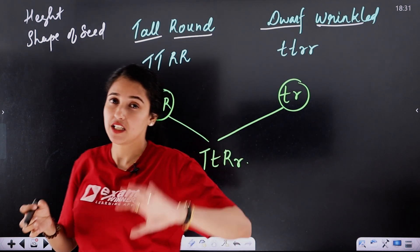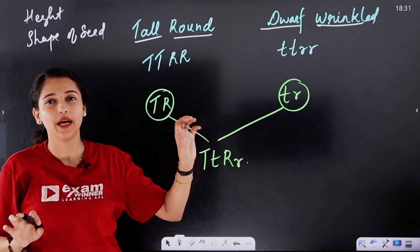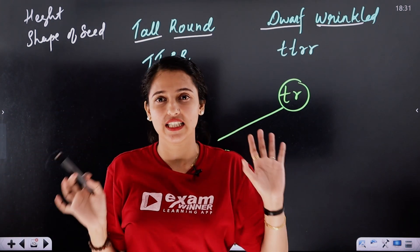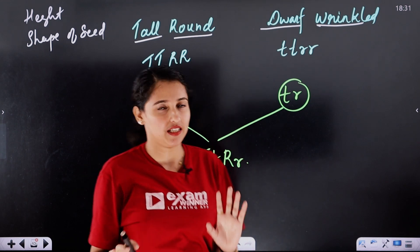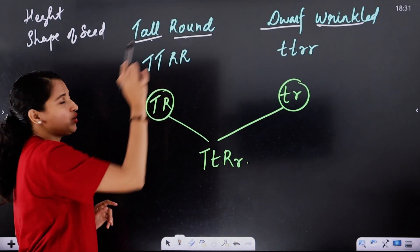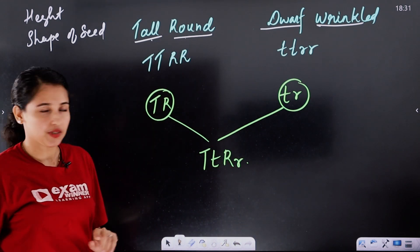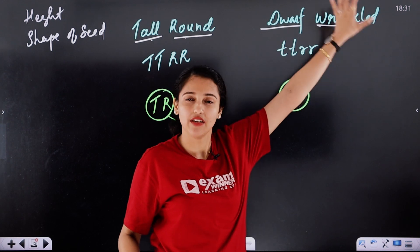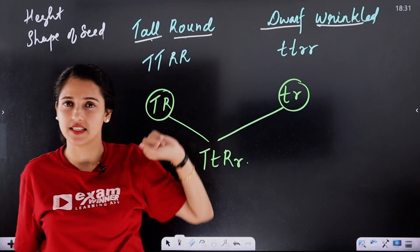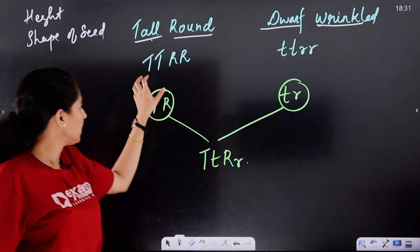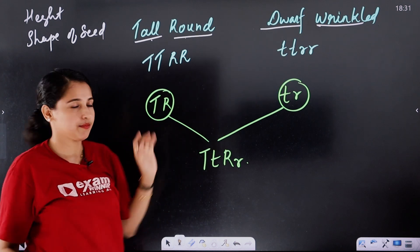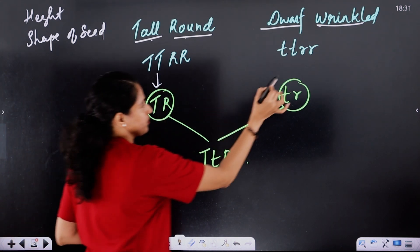As we have already seen in monohybrid cross, the dominant or recessive traits: tall and round are dominant traits, while dwarf and wrinkled are recessive. These are pure lines, which is why we have a homozygous condition. These are the gametes.